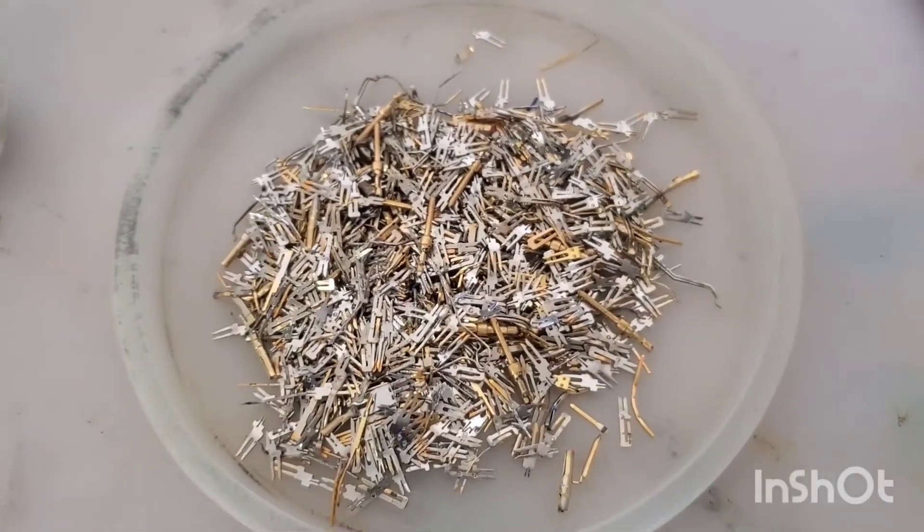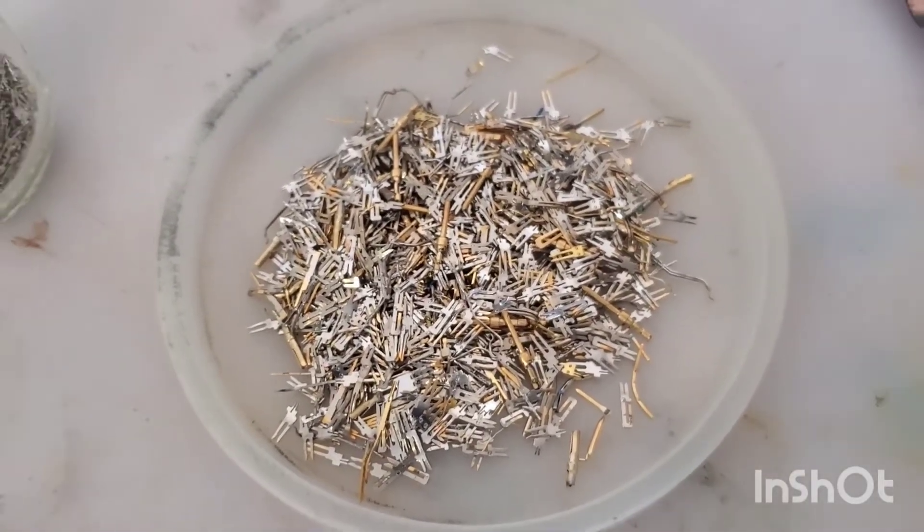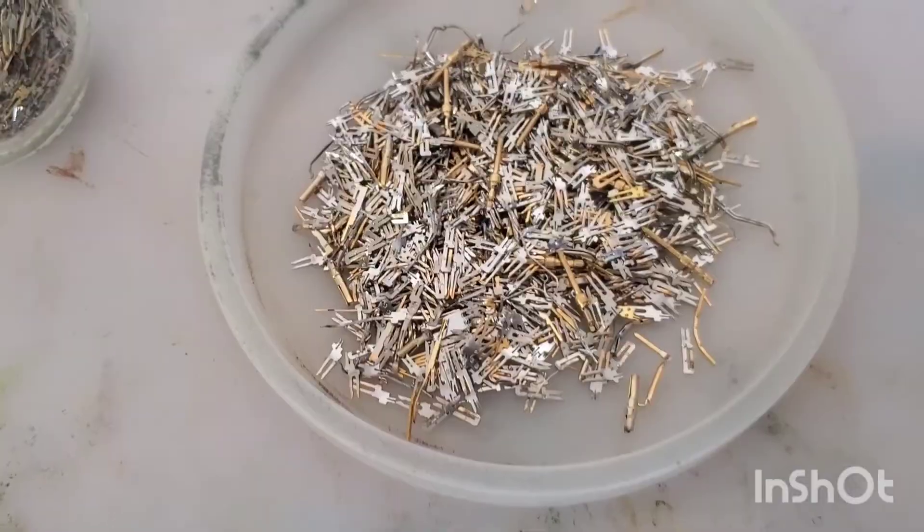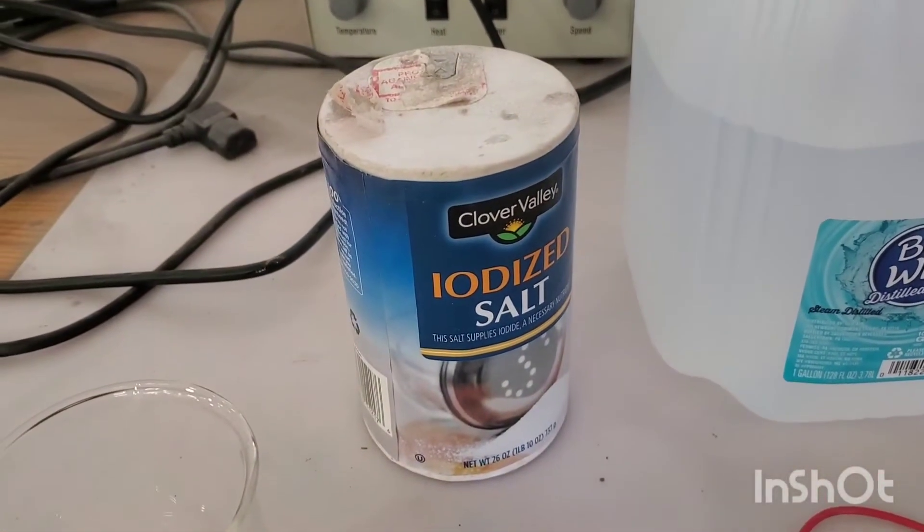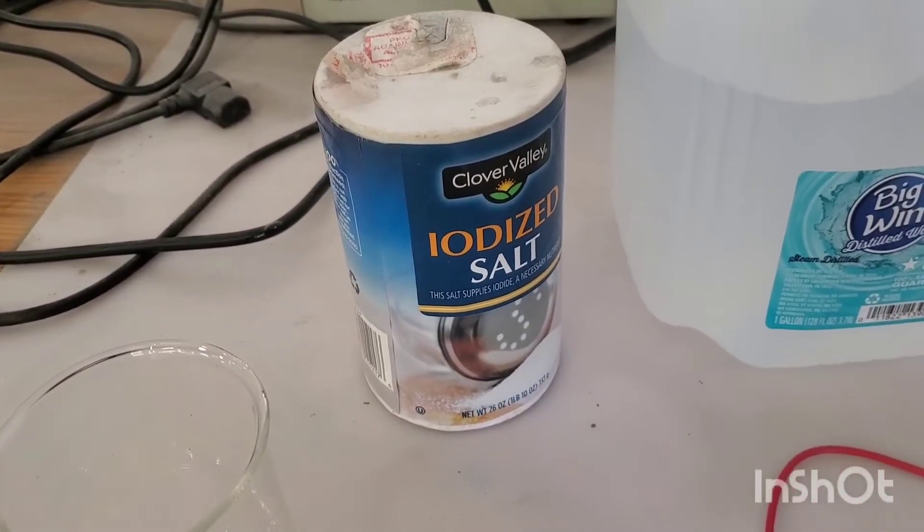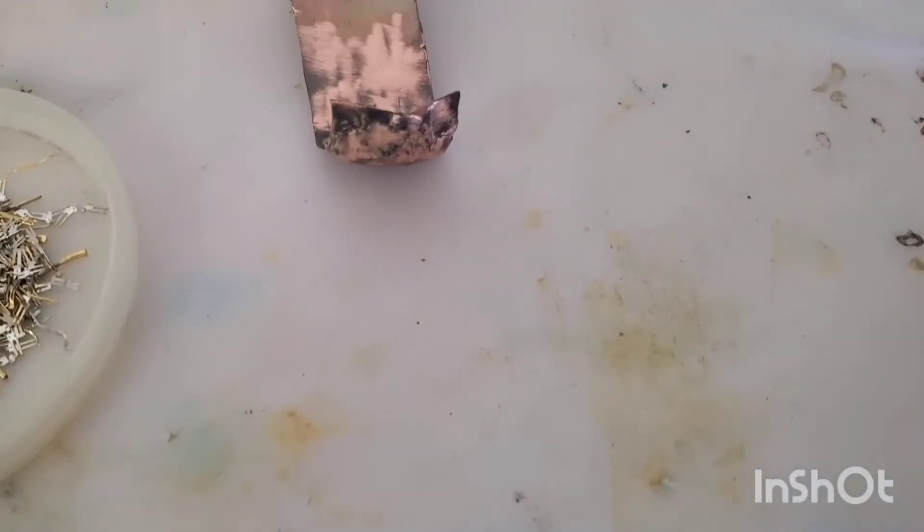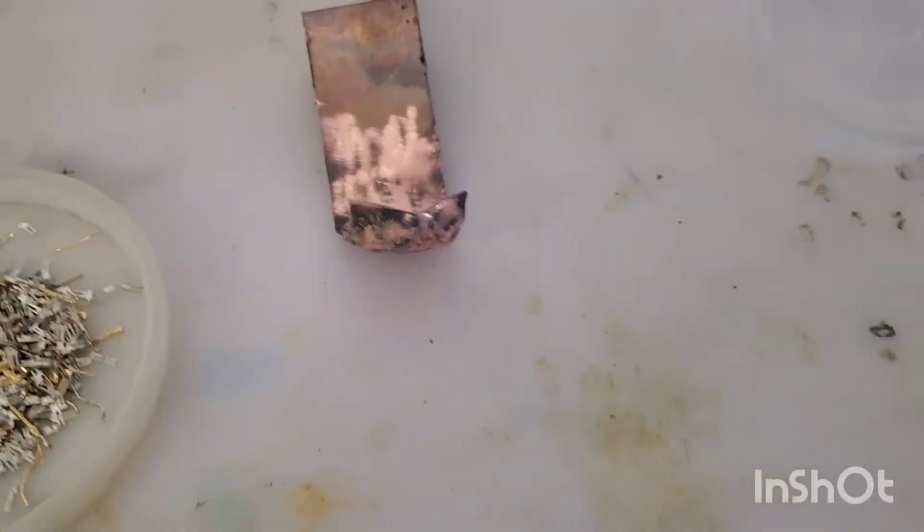We're gonna start with water and salt. The other items we'll be using is a piece of copper I have bent to make a small little bowl on the bottom for an anode.